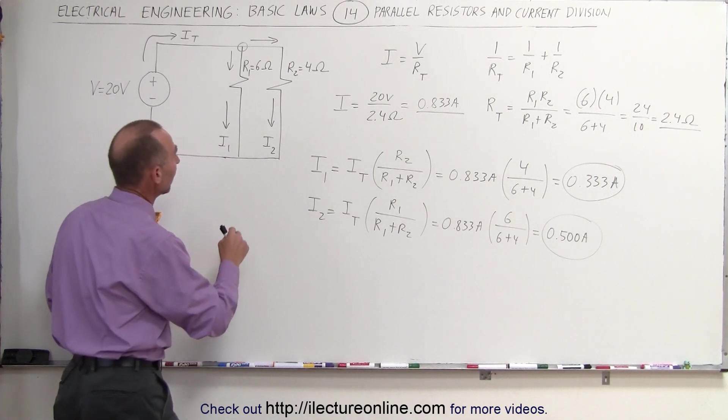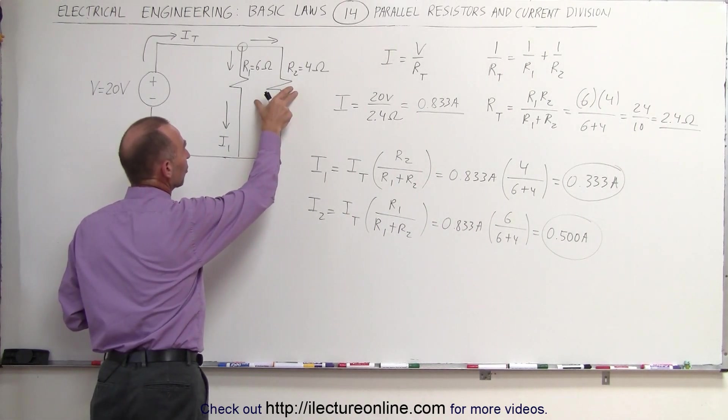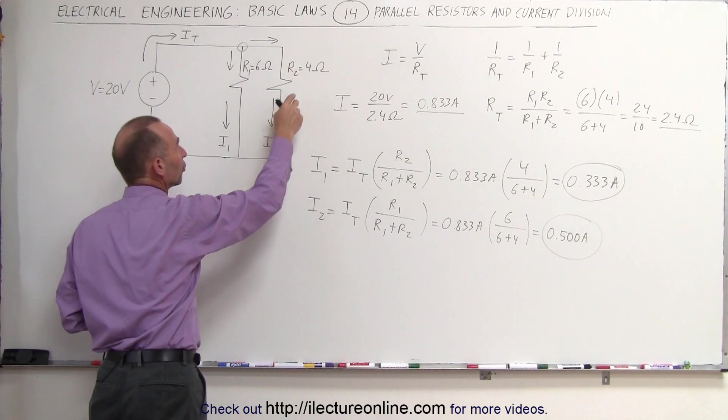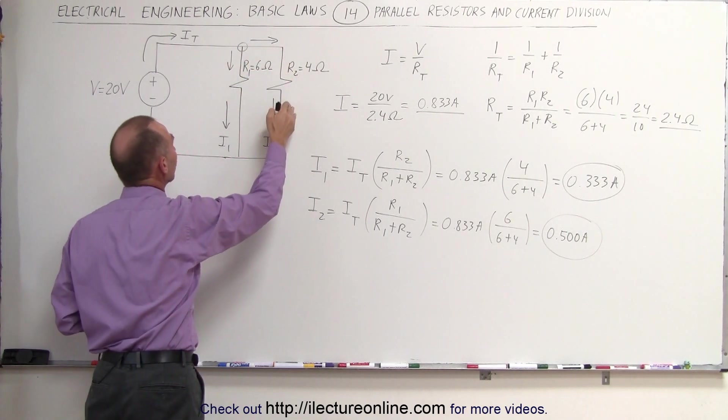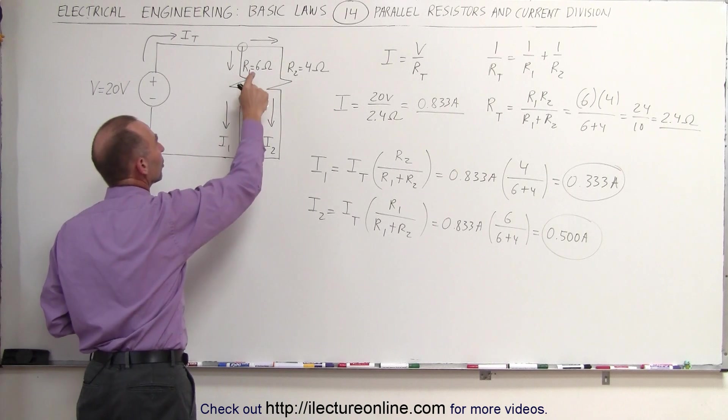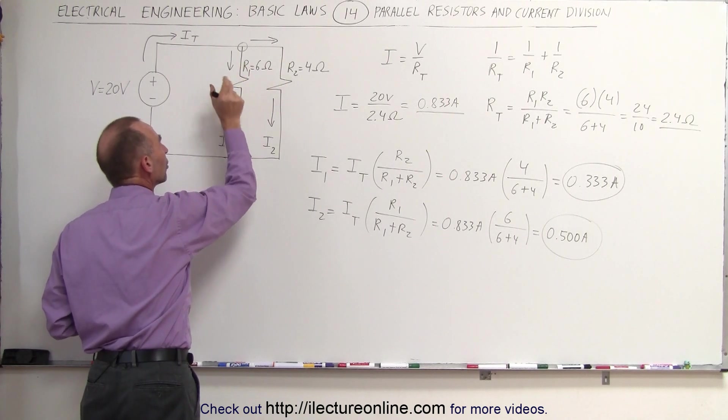It makes sense when you think about it this way: the smallest resistor should have the largest amount of current. So the smaller you make R2, the greater the portion of current coming from the source. The larger the resistor, the smaller the amount of current.